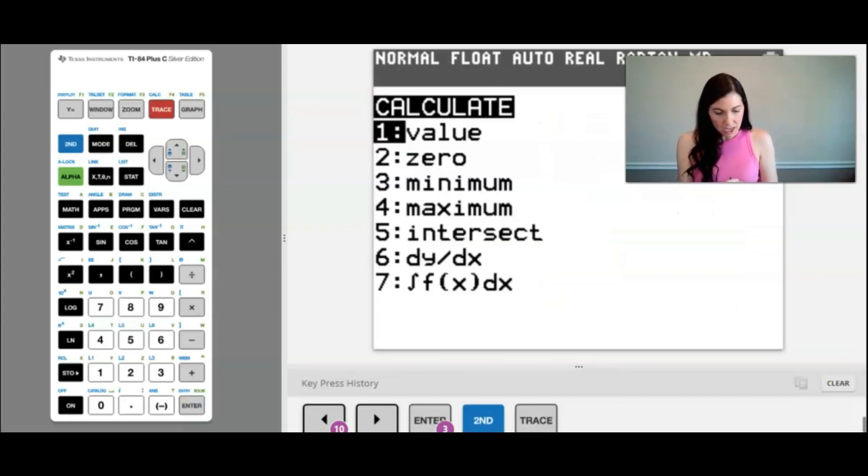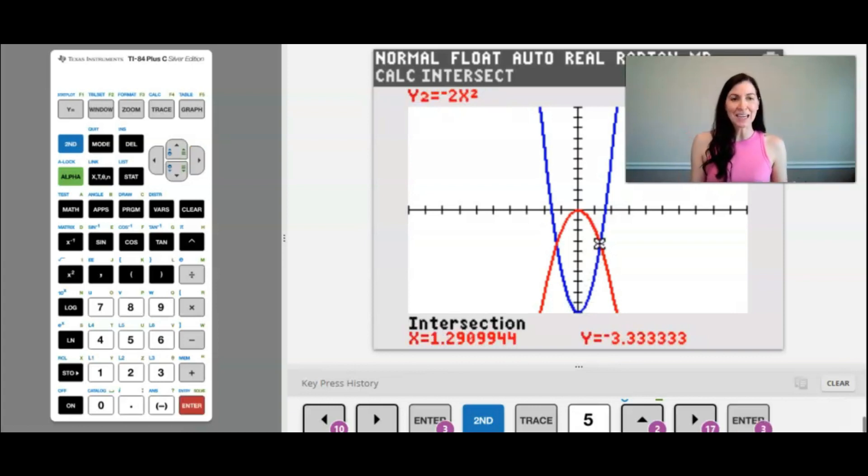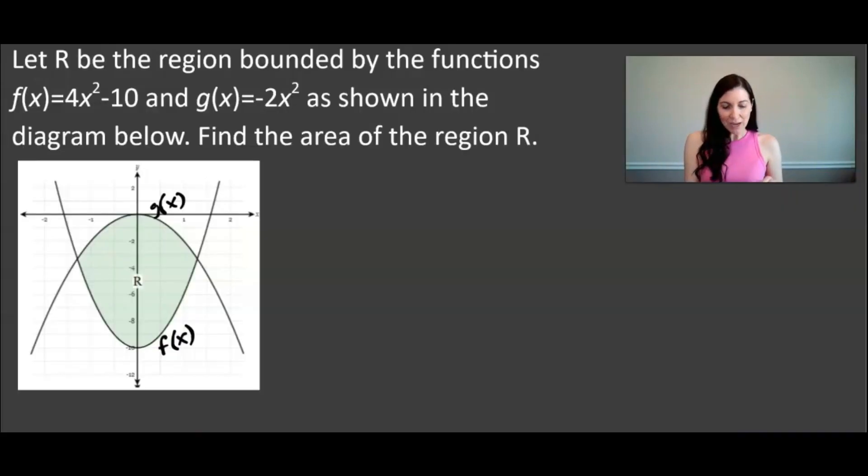Now let's find the intersection point on the right and it looks pretty symmetrical so I'm guessing it's going to be the same x value just positive. And sure enough it is 1.2909944, same number just positive. So that's what we need to set up this integral to find the area.